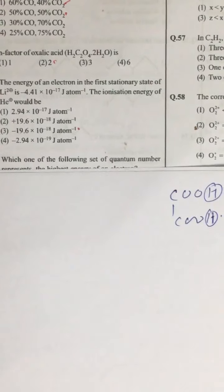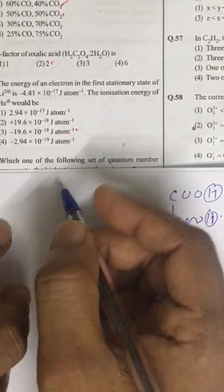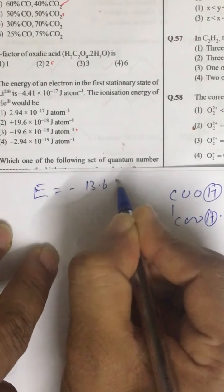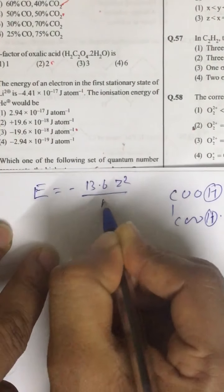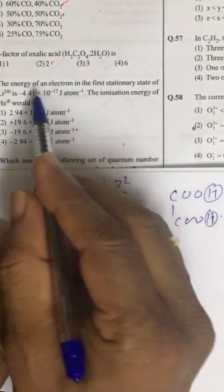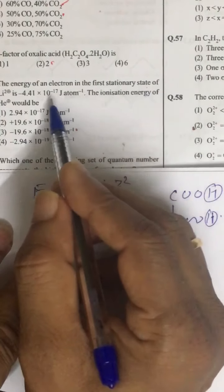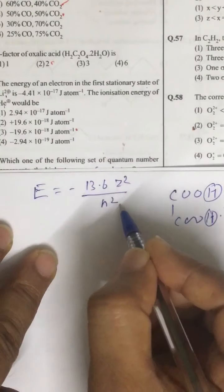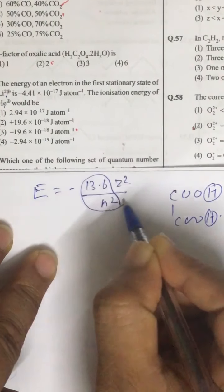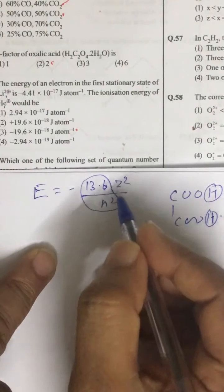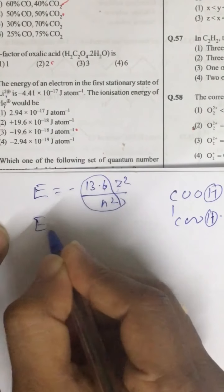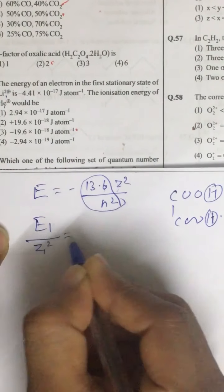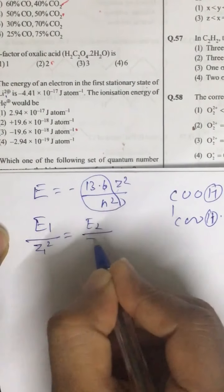Now look at question number 50. We have a relation E is equal to minus 13.6 Z square upon N square. Now for Li 3 positive and H is single positive. The N factor. The shell number remain constant. And this 13.6 is also constant. So we can use this relation E1 upon Z1 square. That is equal to E2 upon Z2 square.